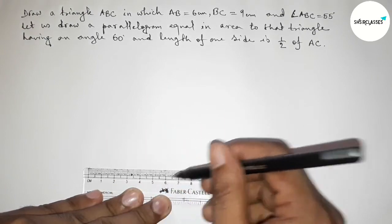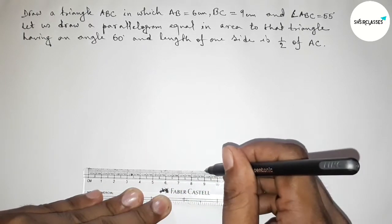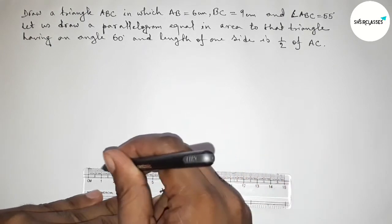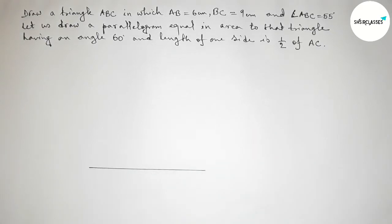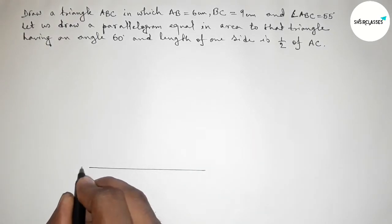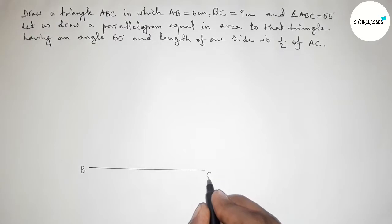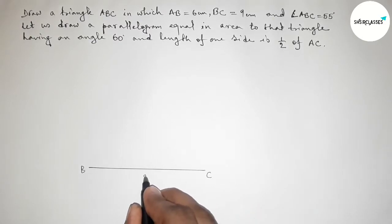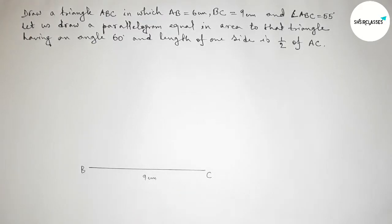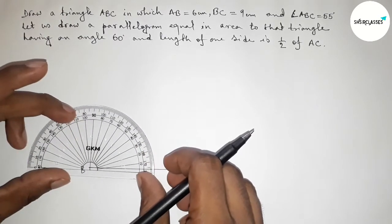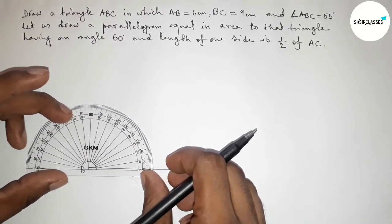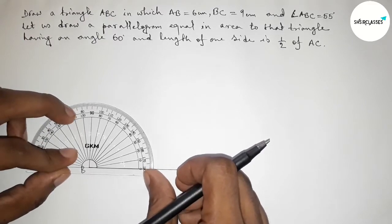First, we draw a line of length 9 centimeters. This is the 9 centimeter line. Taking point B on one end and point C on the other, so BC equals 9 centimeters. Then we draw a 55 degree angle using a protractor at point B.